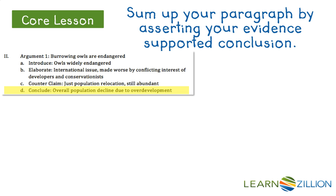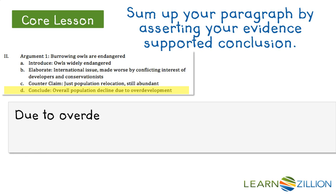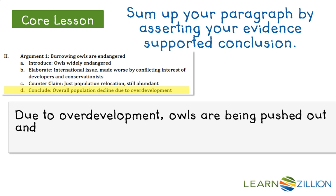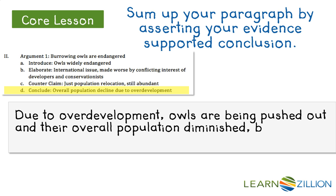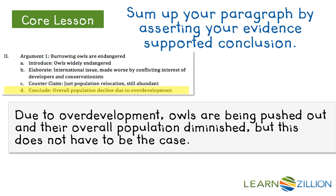I want to get my conclusion that the overall population decline is due to overdevelopment. Due to overdevelopment, owls are being pushed out and their overall population diminished, but this does not have to be the case.